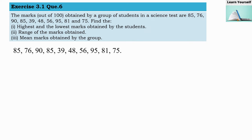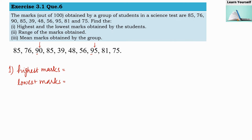First, we find the highest and lowest marks. Looking at the tens place, 9 is the highest digit, and both 90 and 95 have 9 in the tens place. So 95 will be the highest marks. For the lowest, checking the tens digit, 3 is the lowest, so 39 will be our lowest observation. Highest marks are 95 and lowest marks are 39.